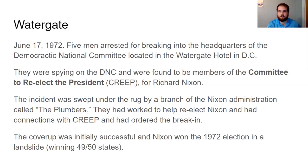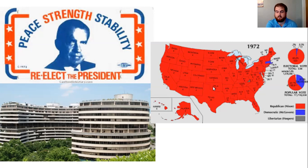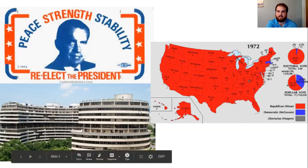No one found out about the Watergate scandal at first. When the 1972 election happened, Nixon won in a landslide — 49 out of the 50 states. Every state in the country except Massachusetts voted for Richard Nixon, including California, New York, states where you'd think they would never elect a Republican. Back in 1972, they all voted for Richard Nixon. This is the Watergate Hotel. In 1972, people didn't know that Richard Nixon had cheated to win the election.